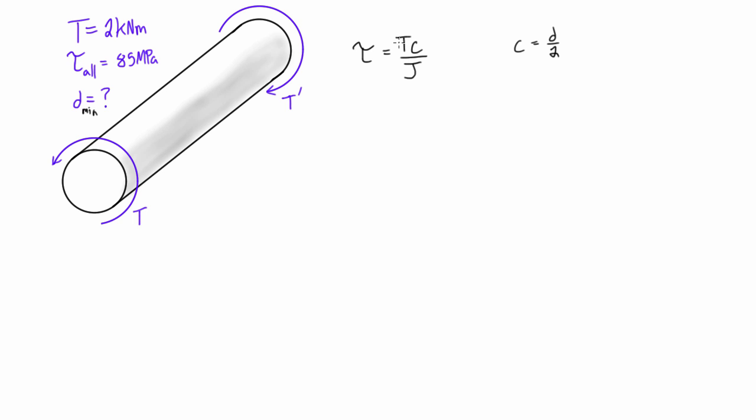We're also using J here, this is our polar moment of inertia. T is the internal torque in any section, and we're going to be plugging in our allowable shear force because we want to figure out what diameter we can have for this shaft.